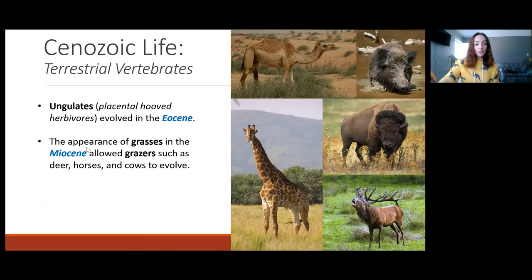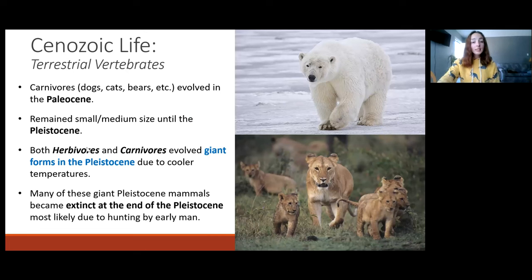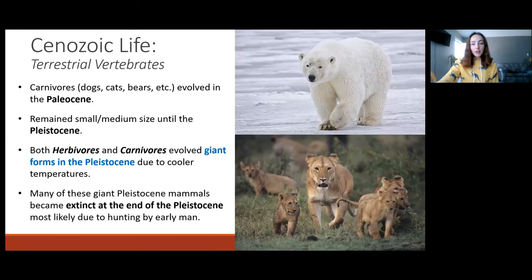Moving on to ungulates — ungulates are just placental hoofed herbivores. These evolved by the Eocene, and the appearance of grasses in the Miocene allowed grazers such as deer, horses, and cows to evolve. Regarding carnivores such as dogs, cats, and bears, these evolved by the Paleocene — very early in the Cenozoic — and remained small to medium-sized until the Pleistocene. By the Pleistocene, a lot of things got mega-sized, including not only some of these carnivores but also some of the herbivores. They evolved into giant forms due to cooler temperatures, since large bodies have smaller surface area per volume and can more easily conserve heat. Examples of these megafaunas include mammoths and giant ground sloths. Unfortunately, many of these giant Pleistocene mammals became extinct by the end of the Pleistocene — it's debated whether this is due to hunting by early man or rapid climate and vegetation change at the end of the Pleistocene.